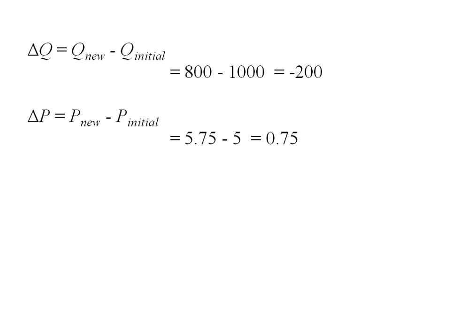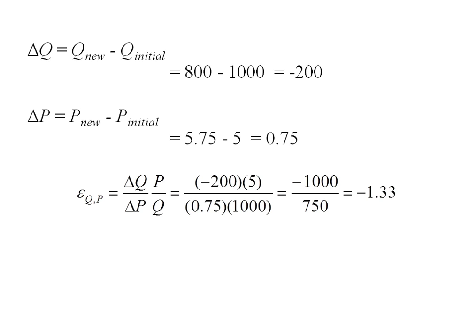We'll use this information and our initial values to plug into our formula. The numerator is delta Q times P, which is negative 200 times 5, our initial five dollars. The denominator is delta P times Q, or 0.75 times a thousand, our initial level of sandwiches.